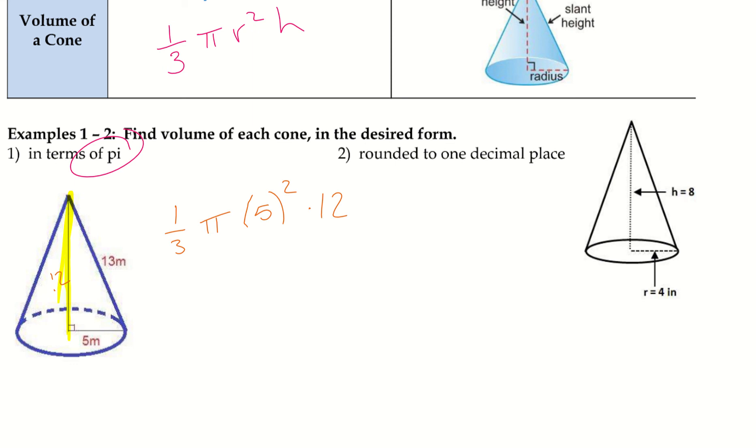And we do want to leave it in terms of pi, so that means I'm only combining all the numbers. So, 5 squared times 12, and then divide it by 3. And we get 100 pi meters cubed. So, the volume, we want to make sure we cube it.